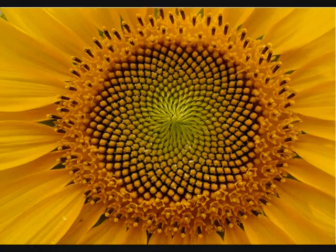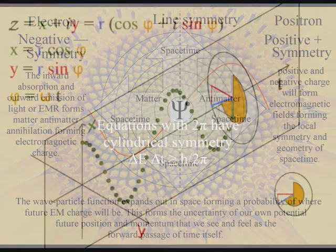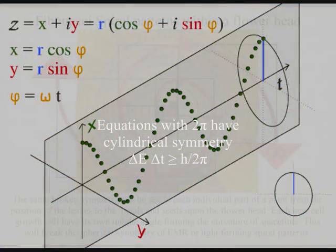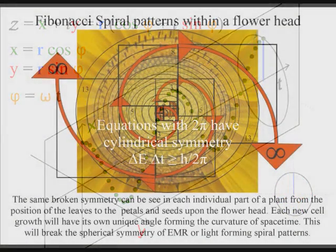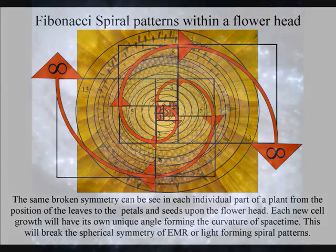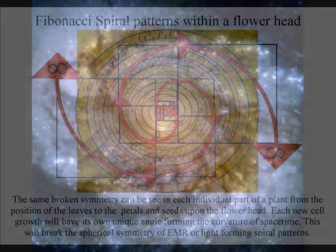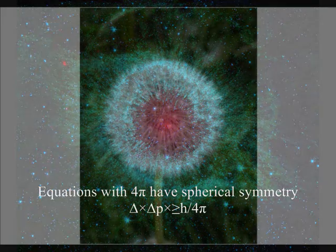We have a universal dynamically forming geometry, forming symmetry from simple dynamics. The forward momentum of electromagnetic radiation will place light-charged particles that repel, becoming equally displaced along the curvature of their own created space-time. The same broken symmetry can be seen in each individual part of a plant, from the position of the leaves to the petals and seeds upon the flower head. Each new cell growth will have its own unique angle forming the curvature of space-time. Therefore we see the same patterns in plant life as we do in deep space, formed by the same universal geometry.